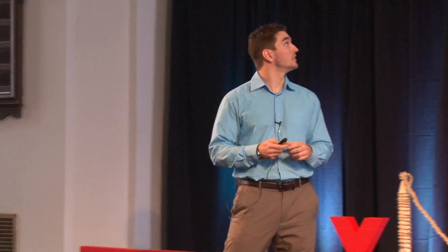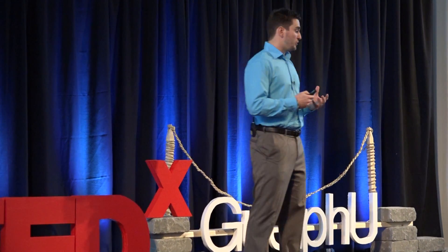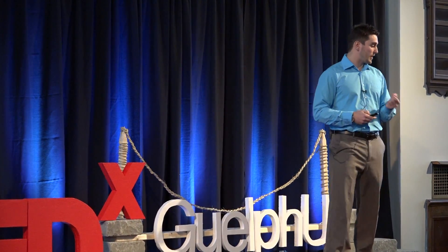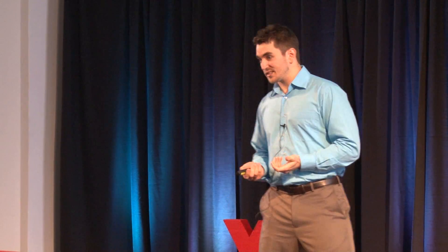It involves placing a negative and a positive electrode on either side of the head and passing a very small current through. When we do this to a participant, it artificially changes the firing patterns of the vestibular nerves — the firing rate of the impulses that are sent will change. When this happens, the participant, in the absence of vision, will think that their head has moved when in fact it hasn't.